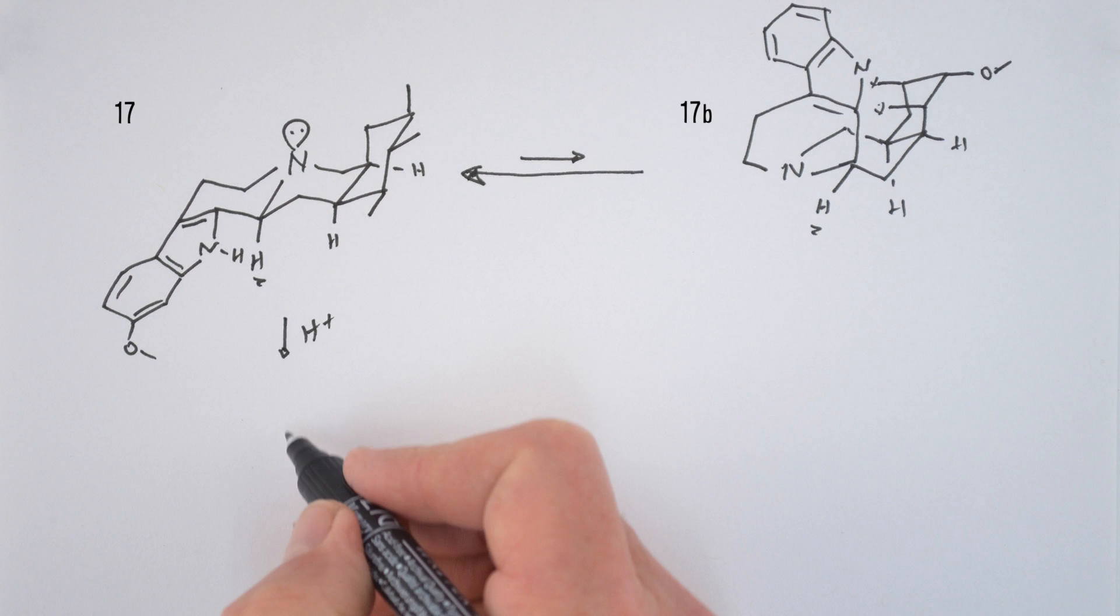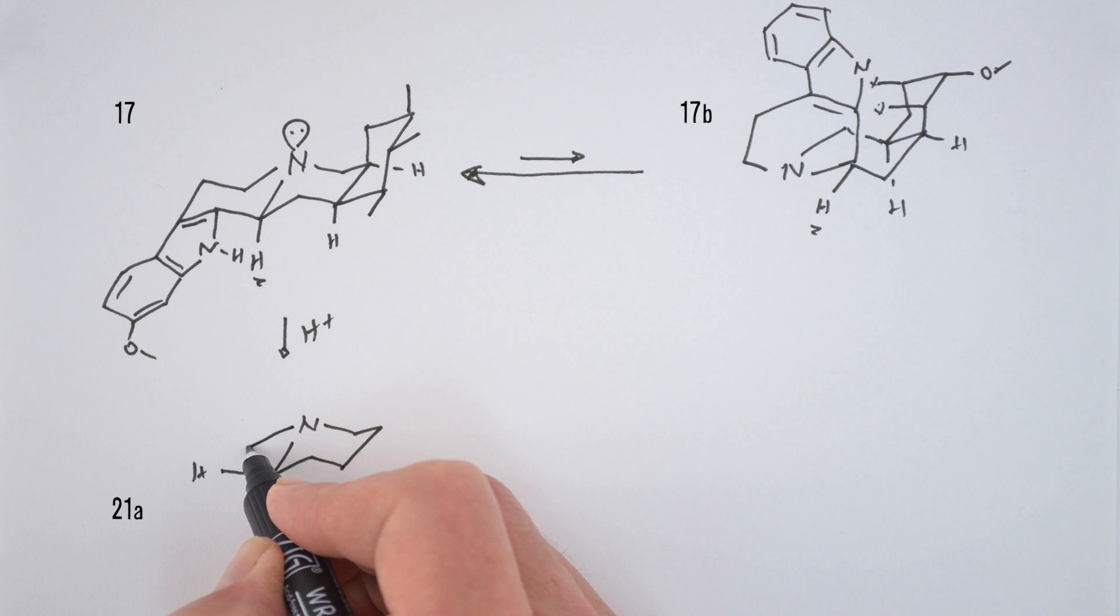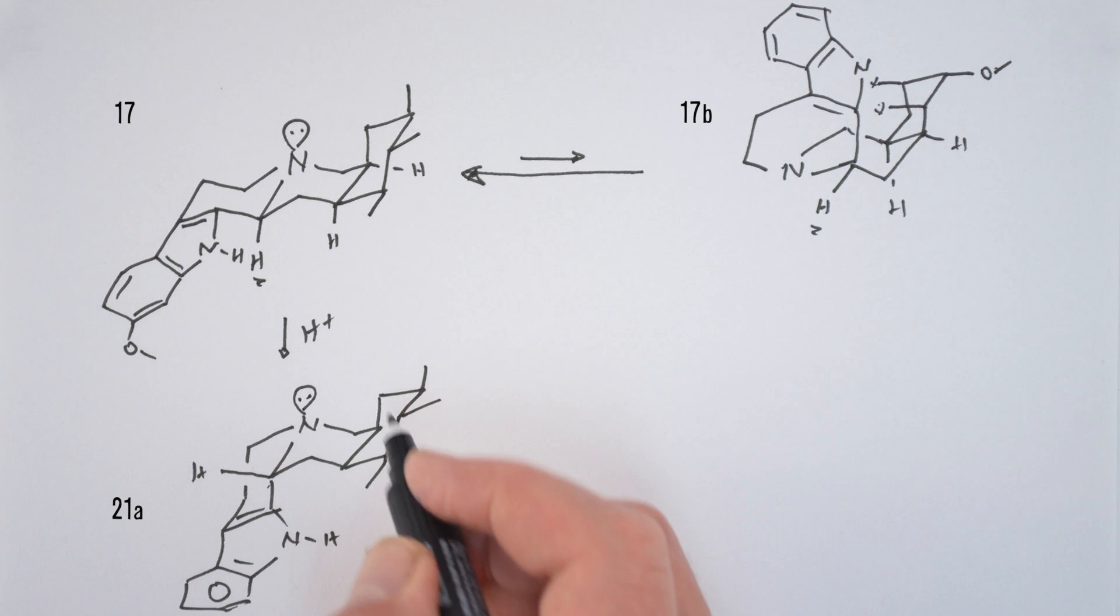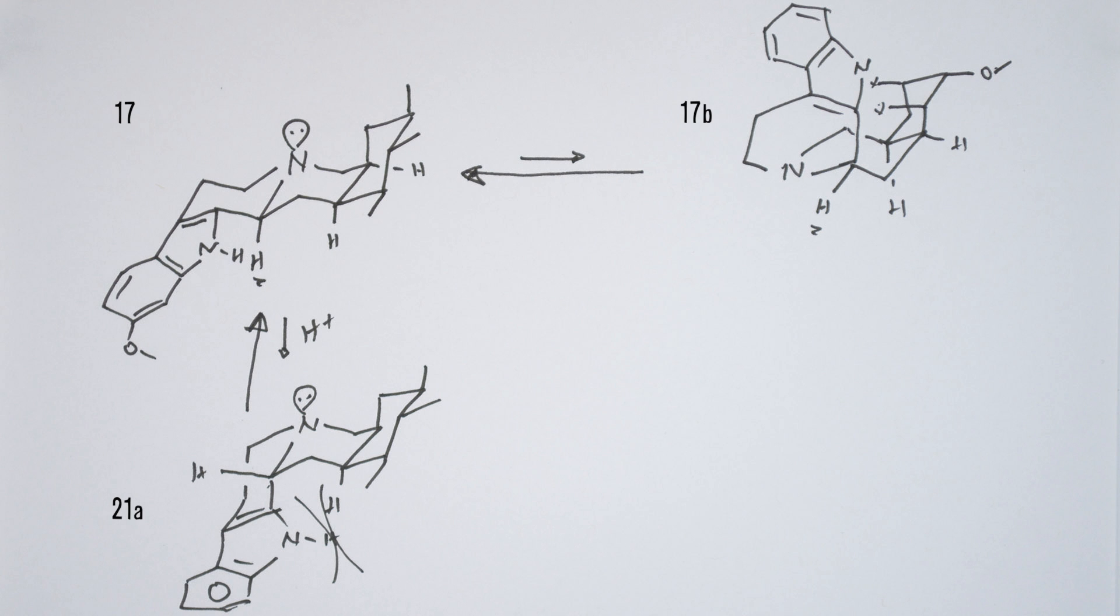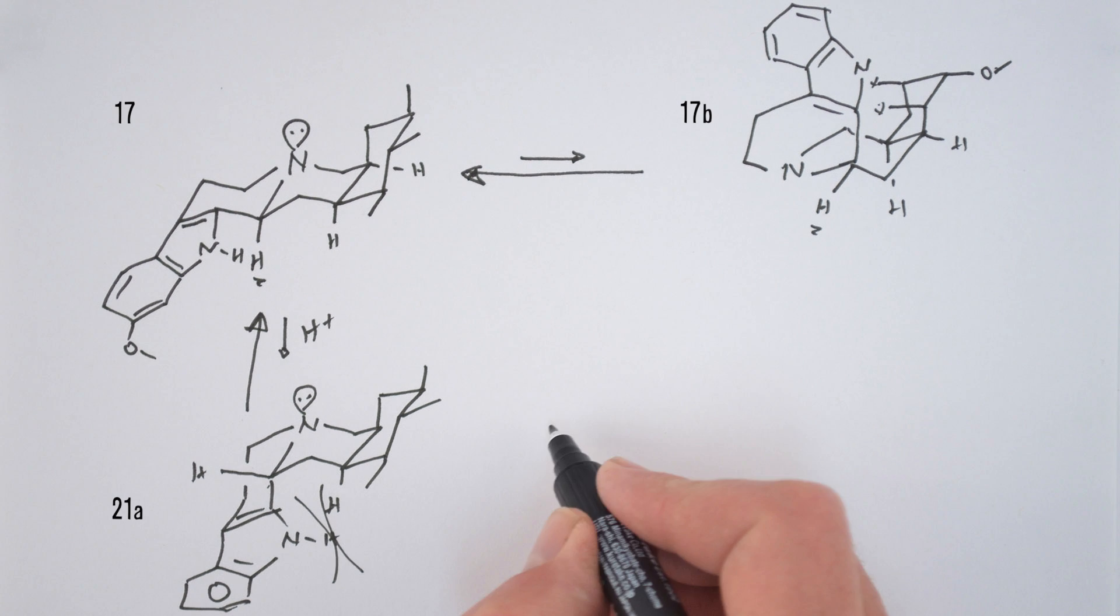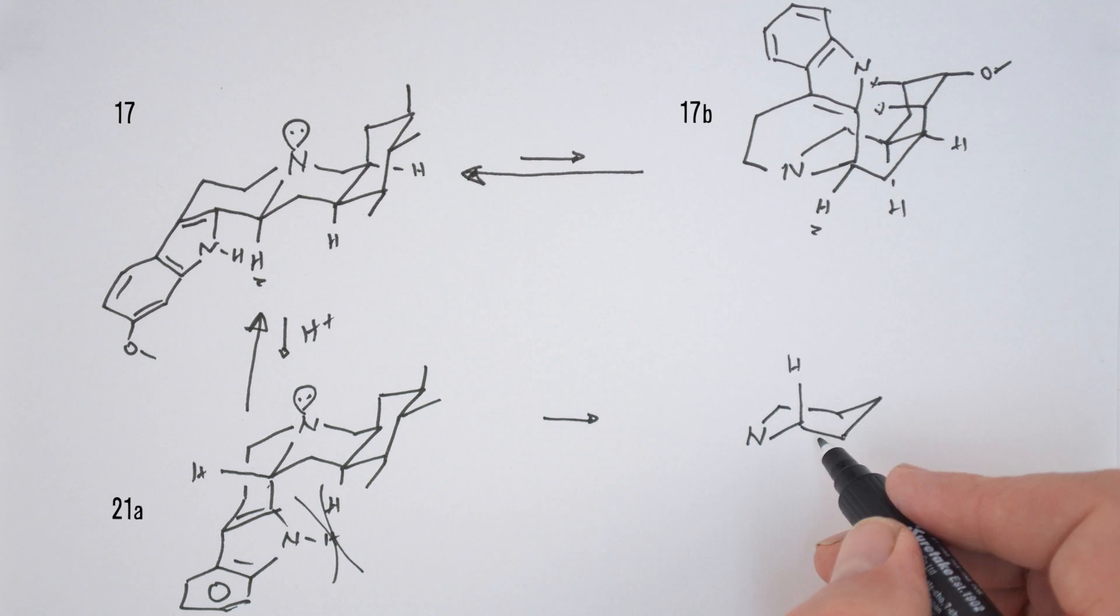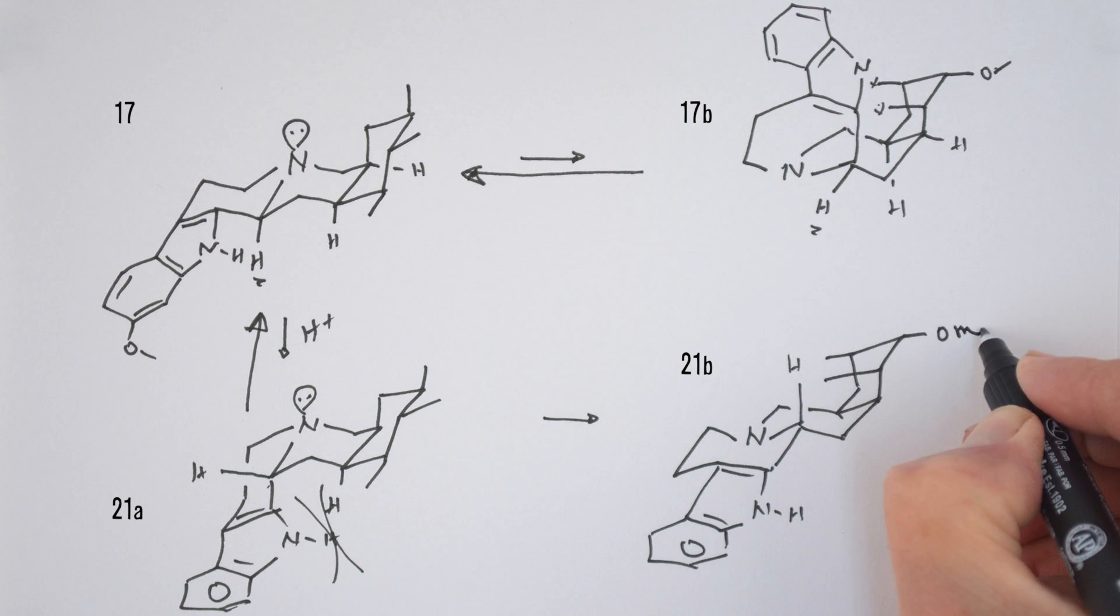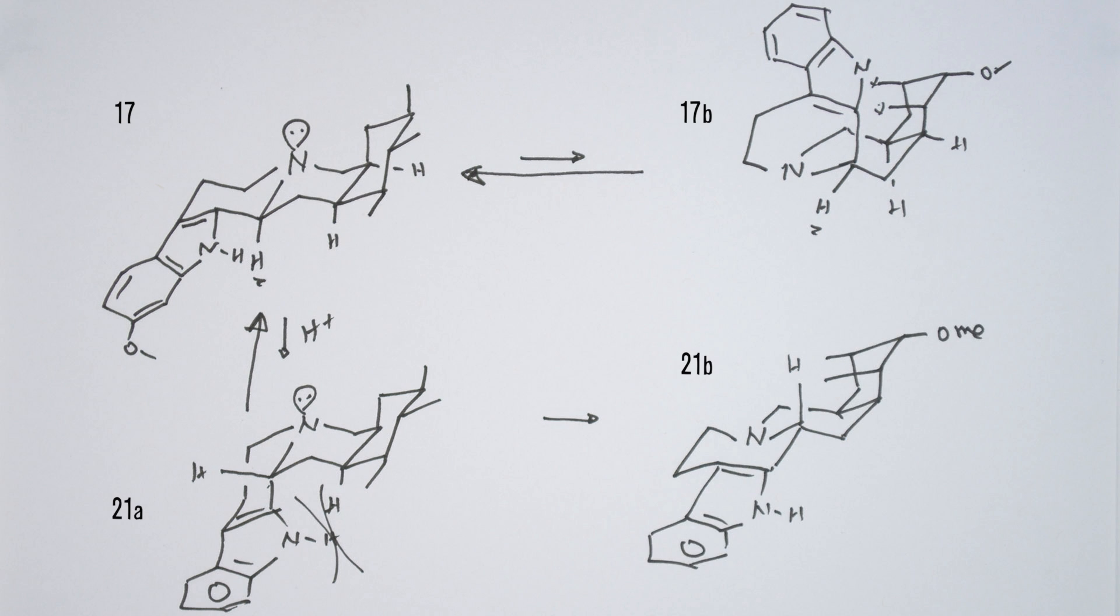If 17 is treated with acid, it could equilibrate to 21a where the hydrogen is up and equatorial. The CD ring junction is cis, so this equilibrium would favor 17a. 21a, which is actually reserpine, could also exist as 21b where the CD ring junction is trans, but ring E would also have all substituents axial, so 21 would exist as 21a.